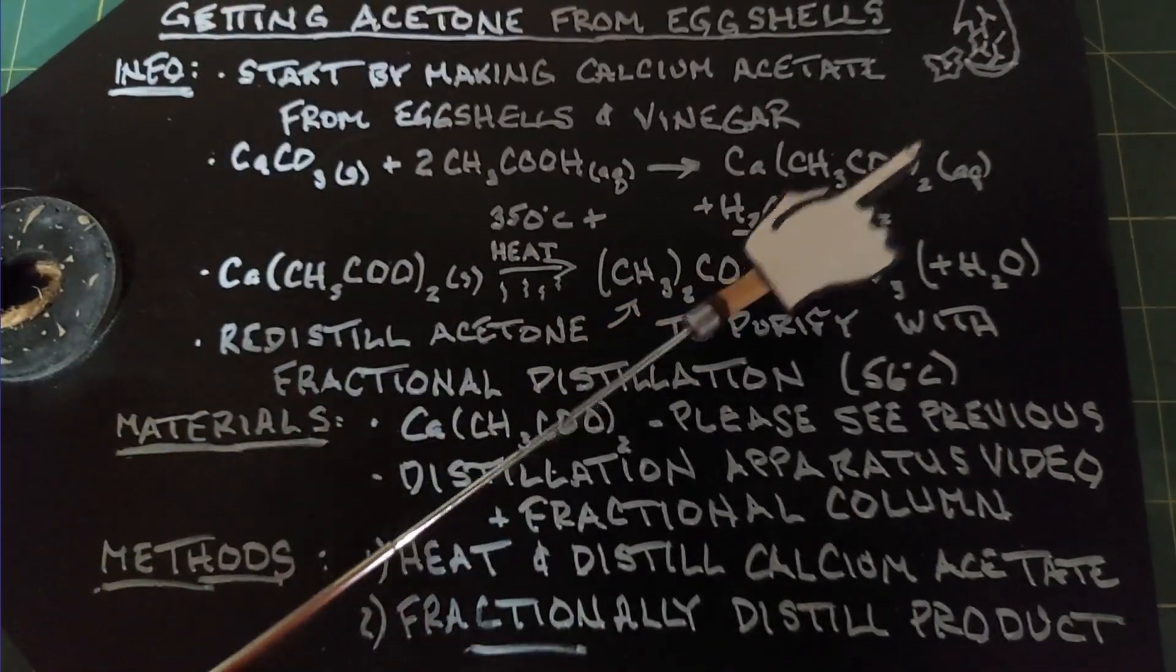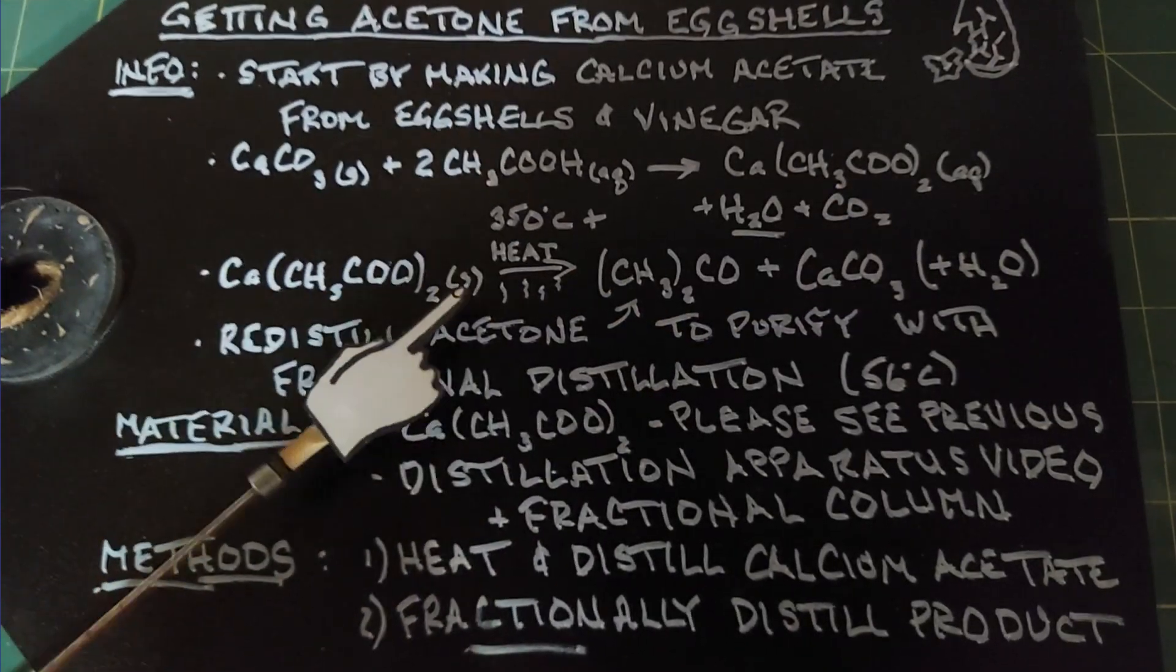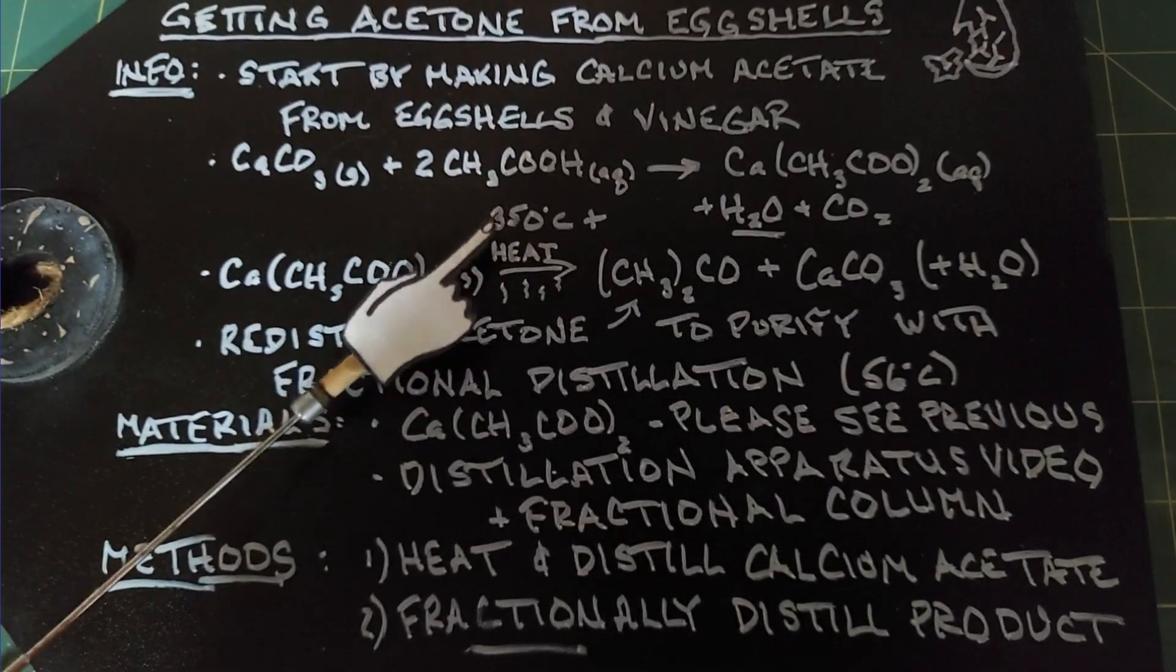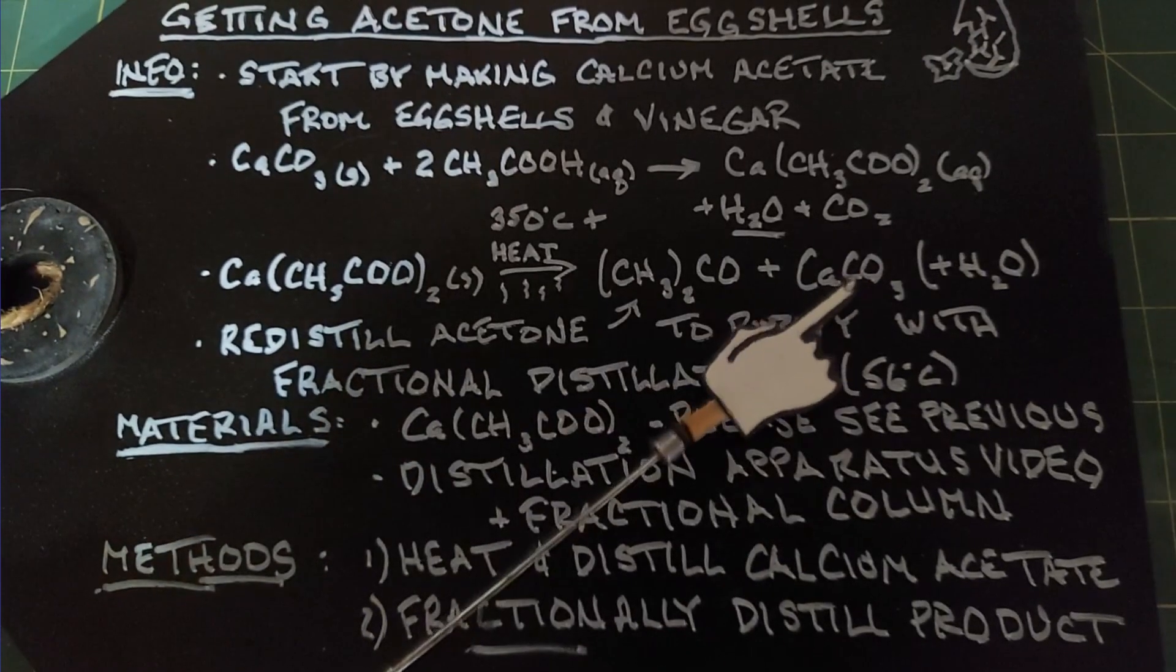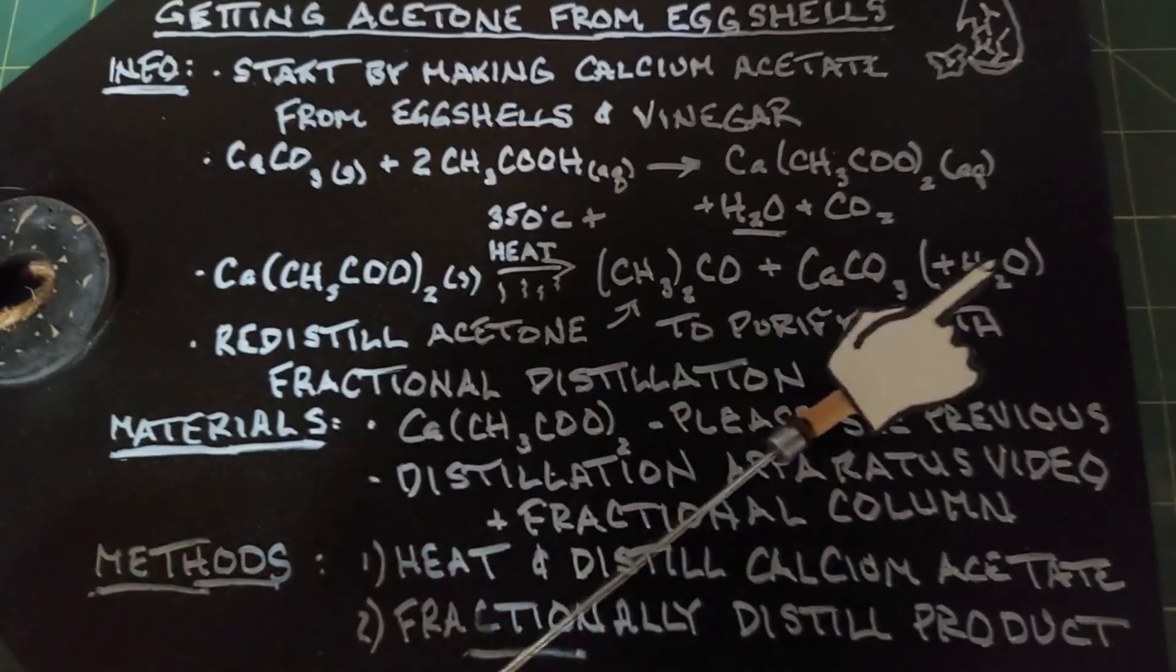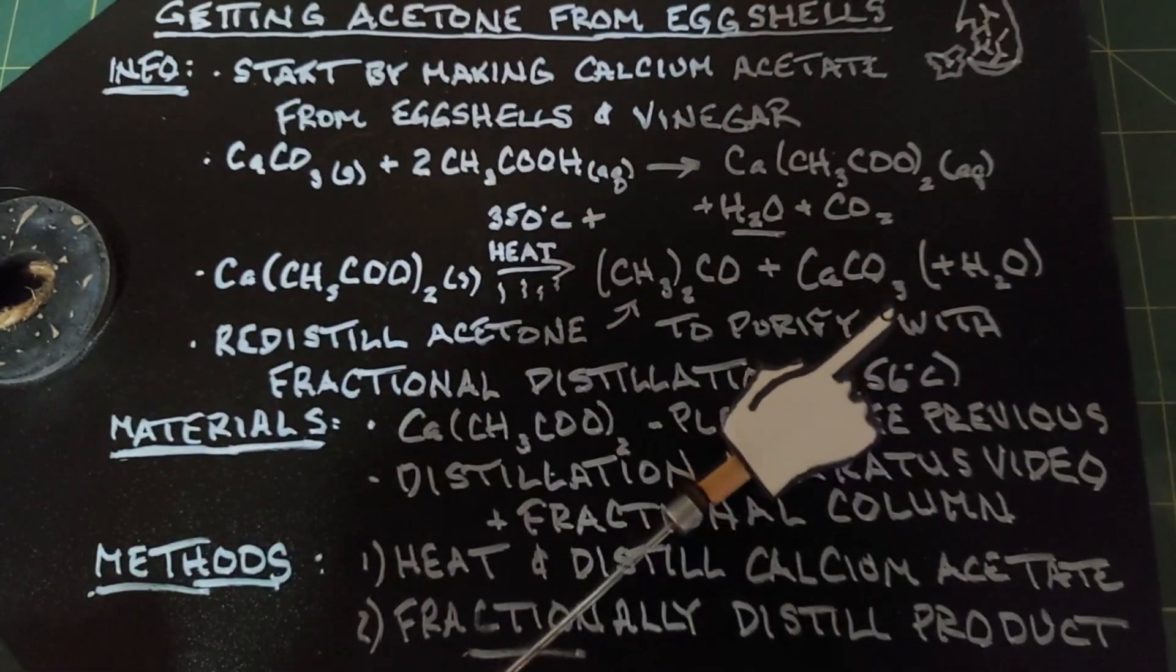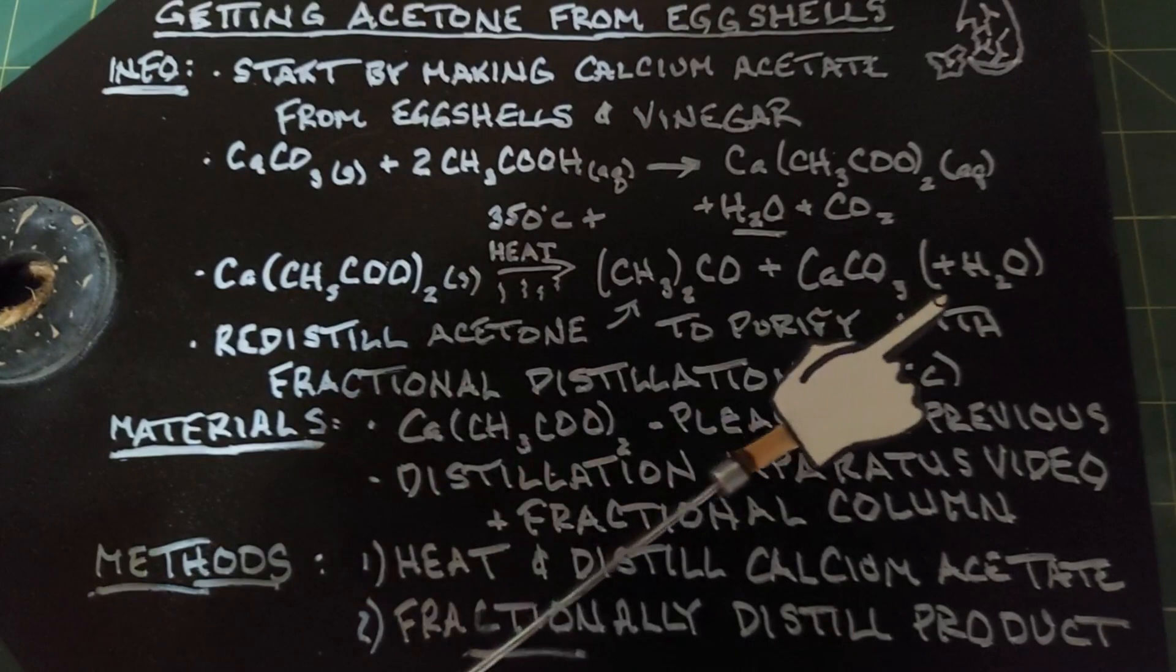The calcium acetate formed as aqueous here because it's mixed in some water. So you want to dry that out until you have a solid. Once you have a solid, you're going to distill this at a very high temperature of 350 degrees plus Celsius, which will yield acetone and calcium carbonate and some water. Because of the mixtures that can come over when you distill at such a high temperature, we're going to take our acetone and redistill it using fractional distillation to purify it.